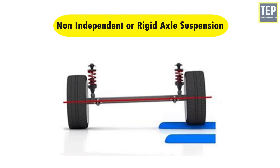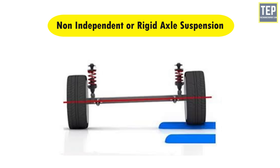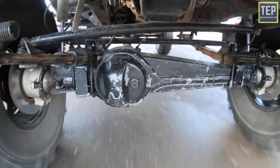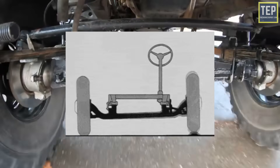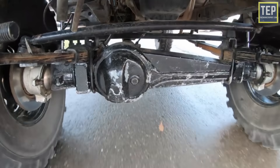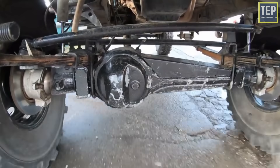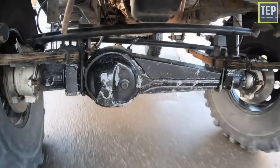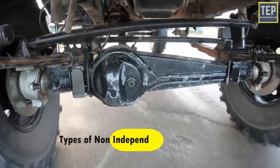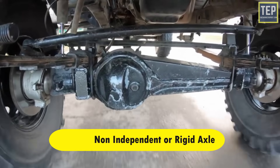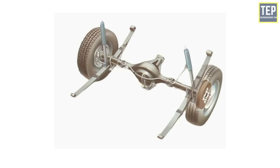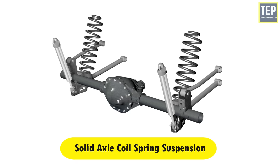In the non-independent or rigid axle suspension system, both wheels on the same axle are dependent on each other. There is a solid or live axle that allows both left and right wheels to connect together. If one side bends in one direction, the other side will also bend in the same direction — this is called dependency. There are two types: solid axle leaf spring suspension and solid axle coil spring suspension.